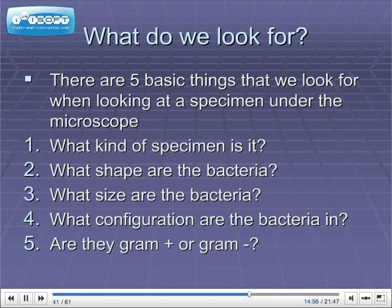Number two, what shape are the bacteria? Do they look like circles, rods, or spirals? Three, what size are the bacteria? Are they big, small, boxy, or thin? Four, what configuration are the bacteria in? Do they group together in any particular way? Do they stand in pairs, or do several seem almost attached? And five, are they gram-positive or gram-negative?